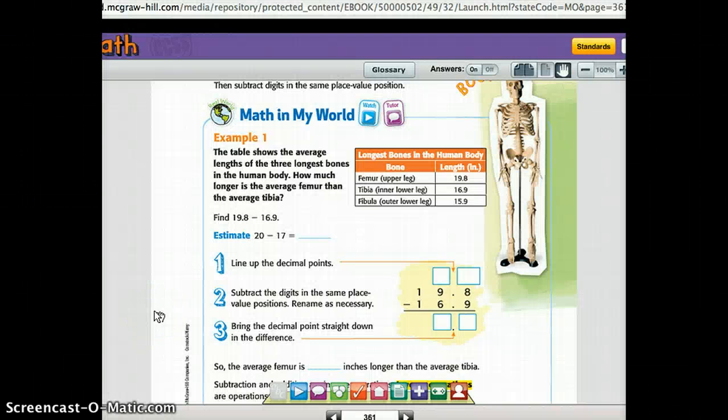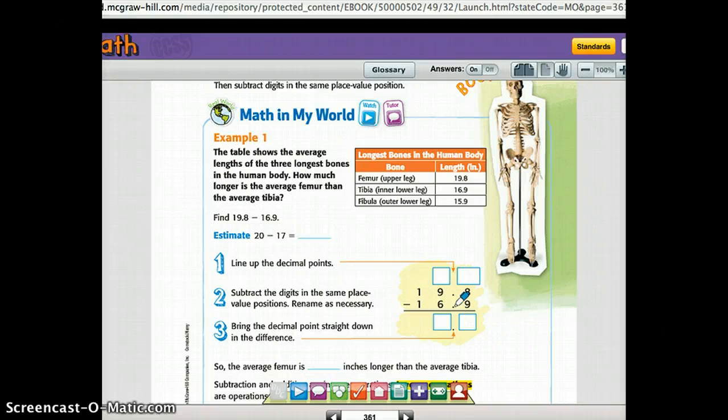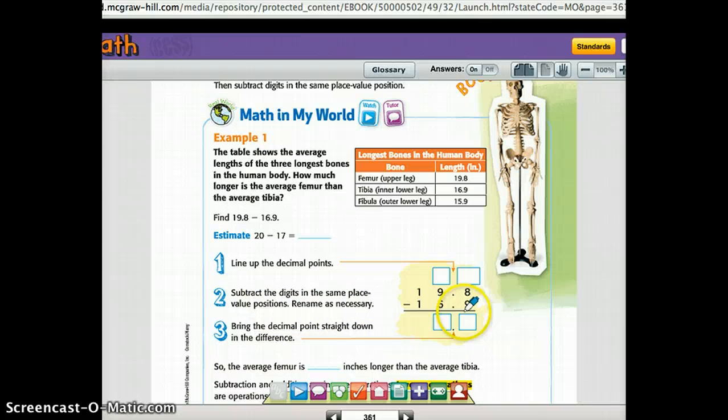Let's take a look at that in our book. I'm on page 361. So it walks you through the steps of subtracting decimals here. And in this case, it's 19 and 8 tenths minus 16 and 9 tenths. So first, they had lined them up. They lined up the decimals. That's really important. And you have to make sure that even if the digits aren't the same or there's different place values, that those decimals are still lined up. And then they subtract digits in the same place value positions.